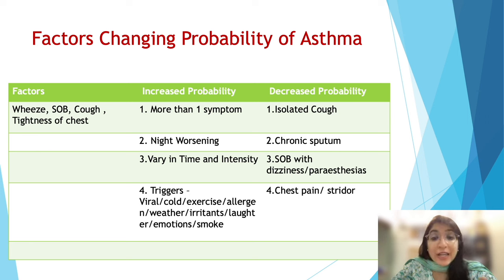Peak expiratory flow is also an acceptable criterion to demonstrate variability in airflow limitation. The average daily diurnal variability should be more than 12% in adults. Diurnal variability is calculated as: the day's highest minus the day's lowest PEF, divided by the mean of those two values, multiplied by 200. For children, the threshold is more than 13%.